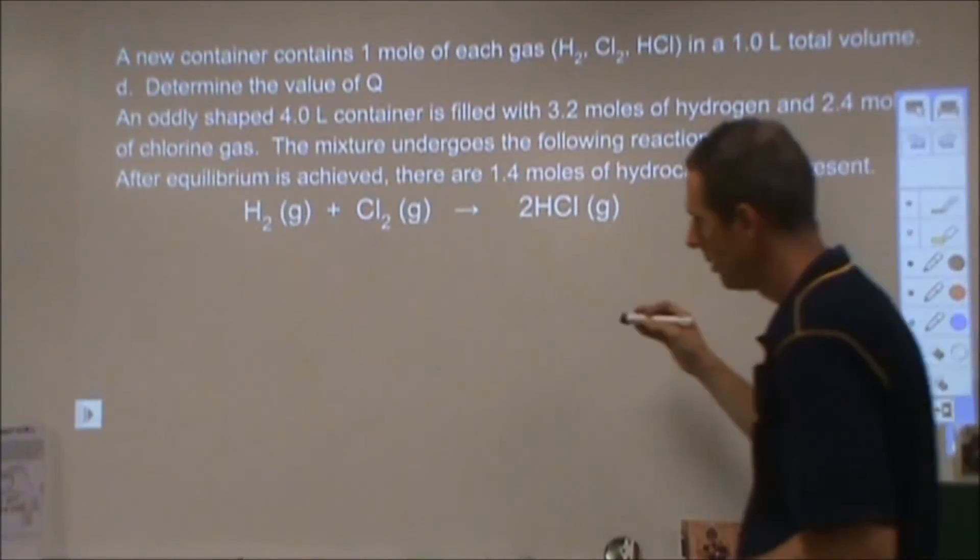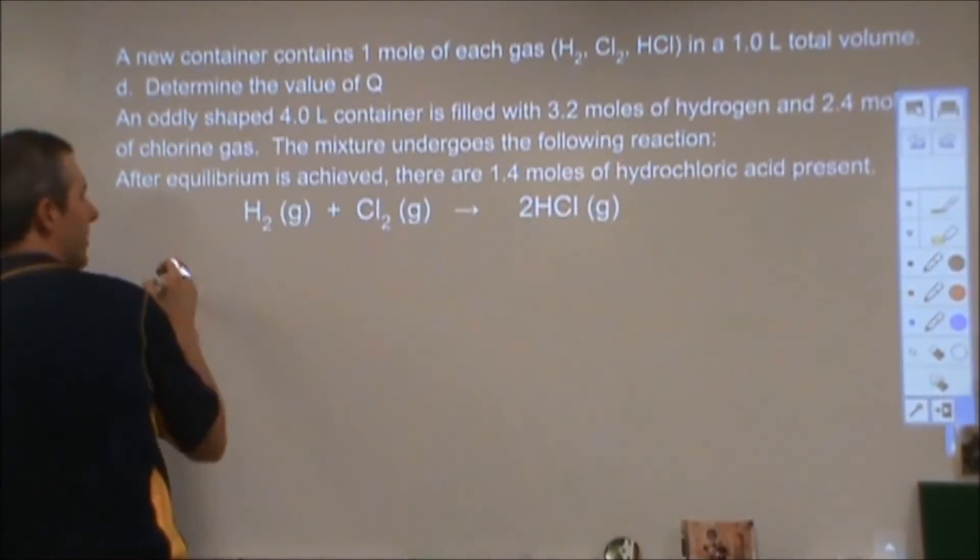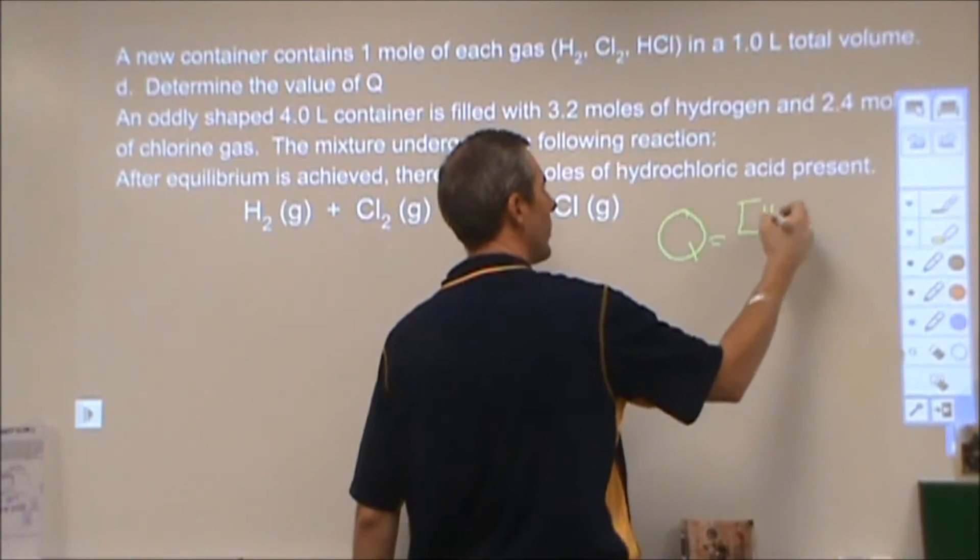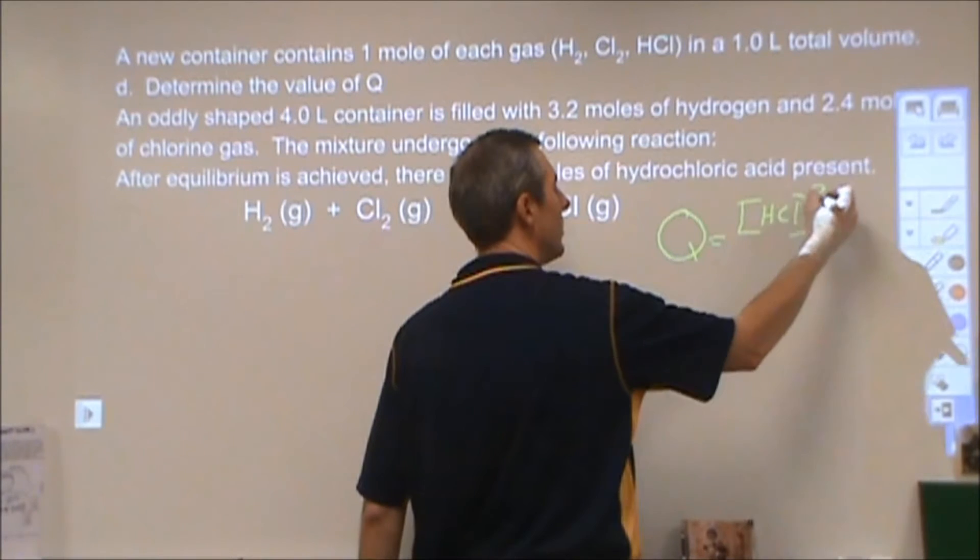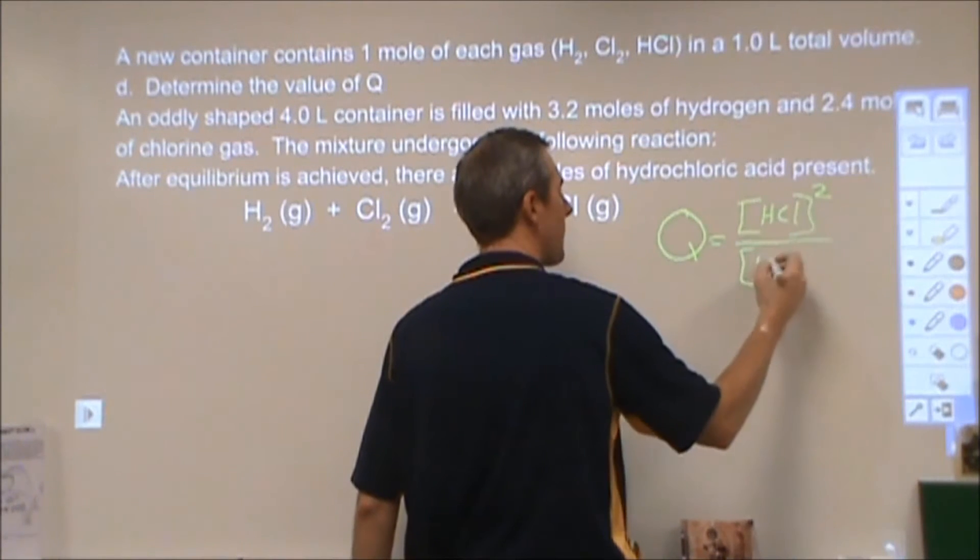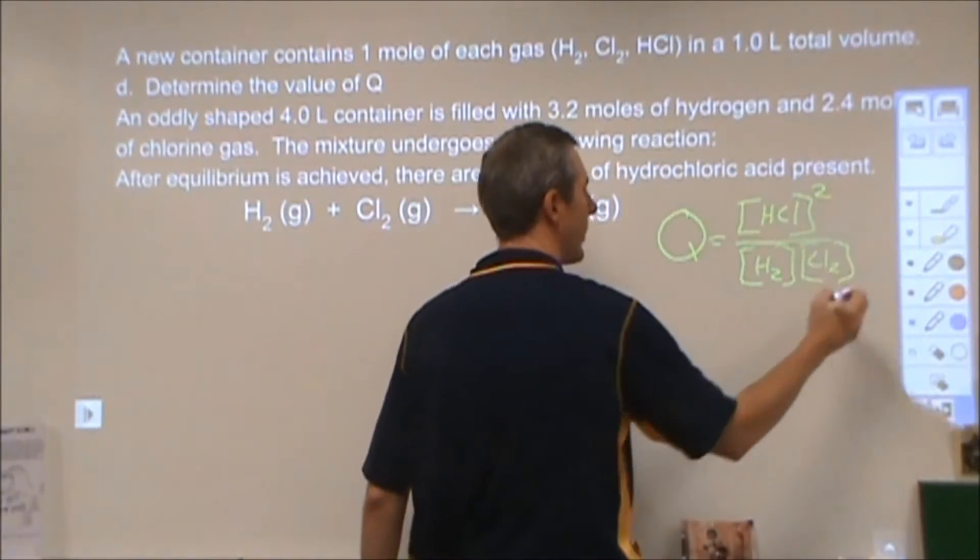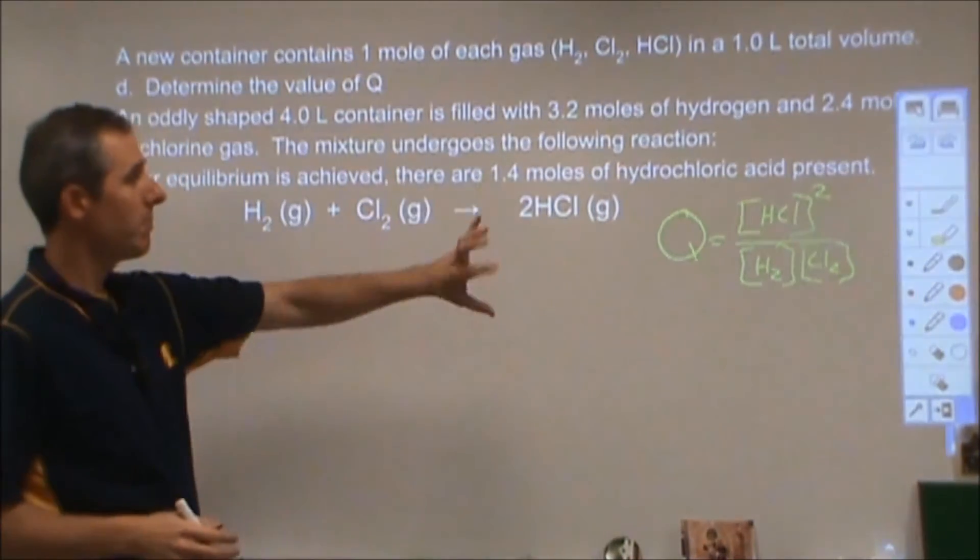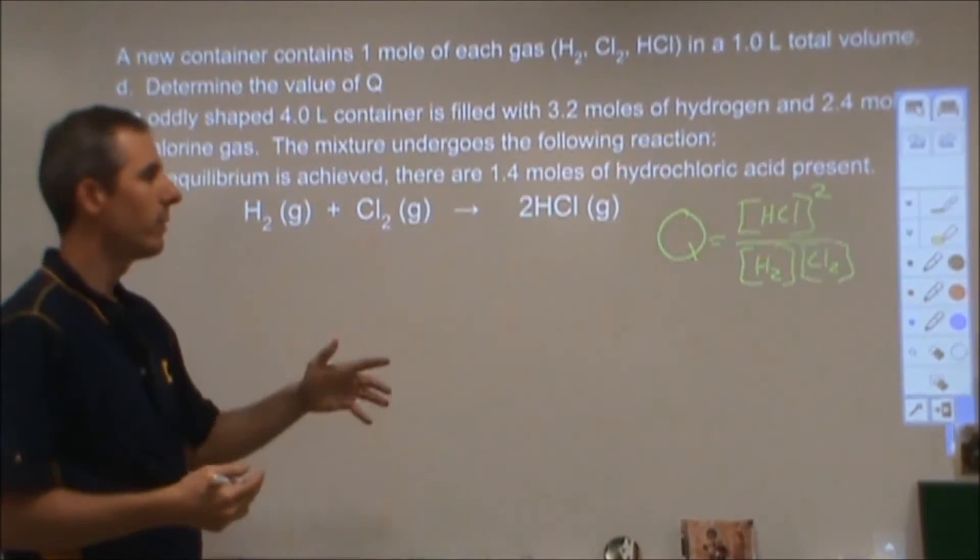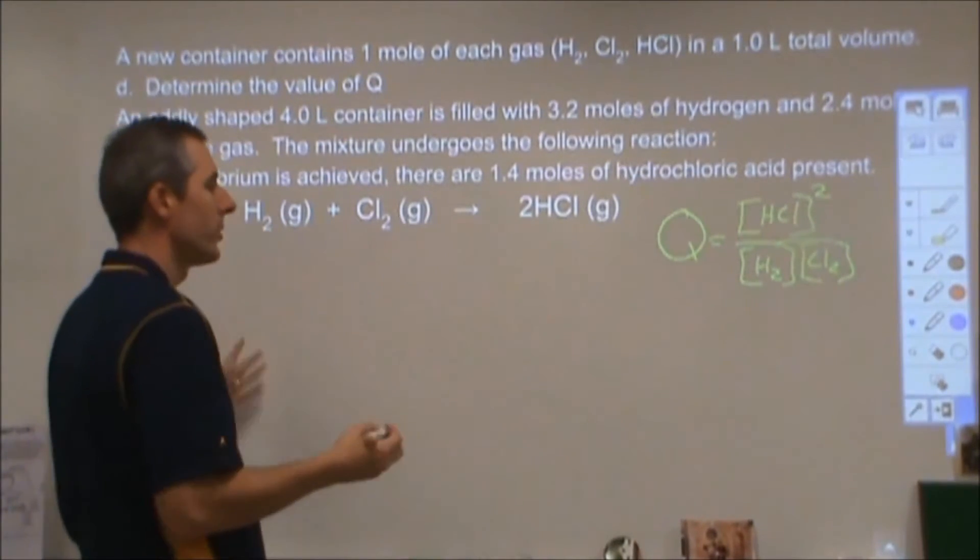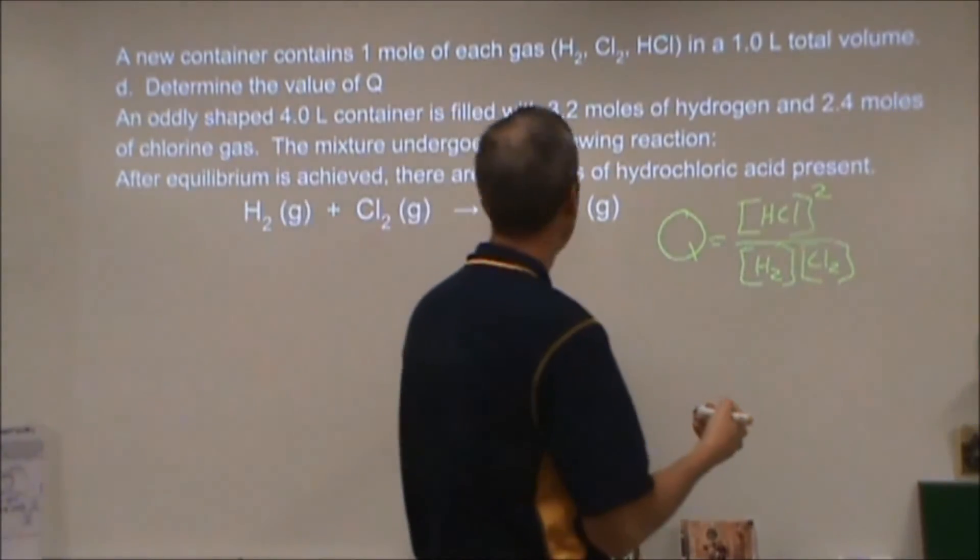So Q is the same thing as K, it's just that we don't know whether or not this particular reaction is at equilibrium or not. So I'm going to plug in the same ratios of chemicals, but I don't know if this is at equilibrium. I don't know if the rates of the forward and the reverse are the same. So to solve for Q, I'm just really going to plug these in.